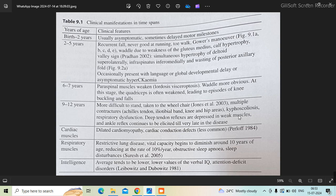So when a child presents with myopathy, these are the key history points. This is the natural history of Duchenne's muscular dystrophy. Similarly, we will discuss the natural history of limb girdle disorders...